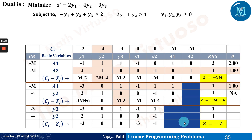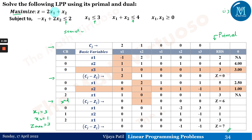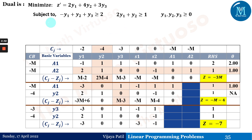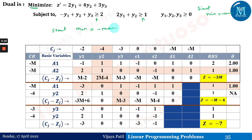Now we check this with the dual. The dual of this question has three variables (y1, y2, y3) and two constraints, since the primal had two variables and three constraints. The primal was maximization, so the dual is minimization, with all constraints in greater-than-or-equal-to type. We convert the minimization to standard form as the negative of a maximization problem, as is standard for the simplex method.